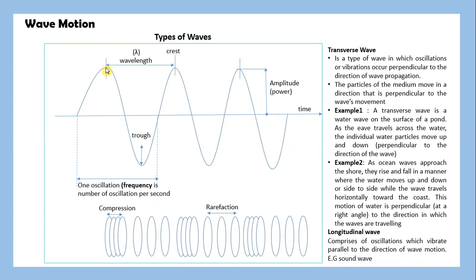If you can see from this graph, it runs to the bottom. So this is the process where we have a situation of compression. And when it goes up to the top, this is where we see rarefaction. The particles of the medium move in a direction that is perpendicular to the wave movement. Example: a transverse wave is a water wave on the surface of a pond. As the wave travels across the water, the individual water particles move up and down perpendicular to the direction of the wave.